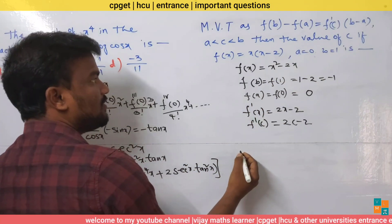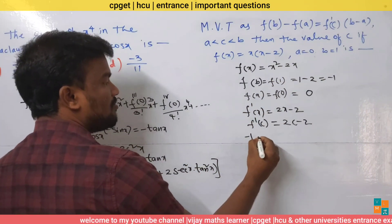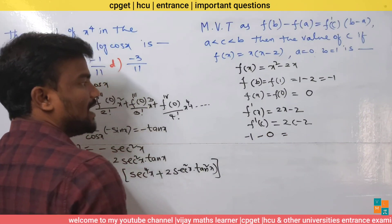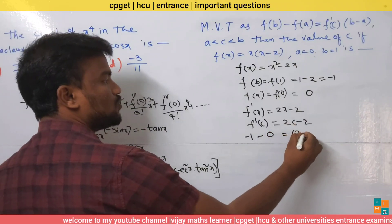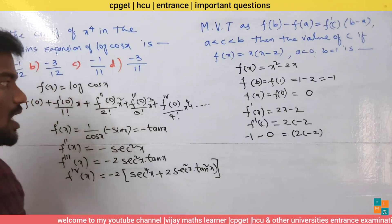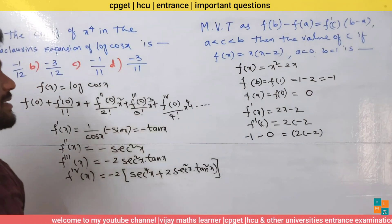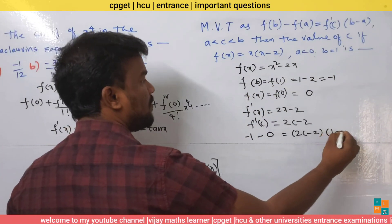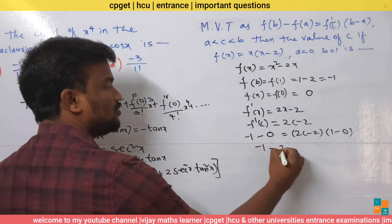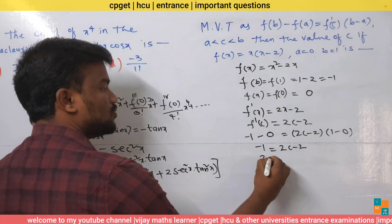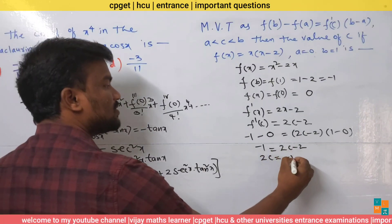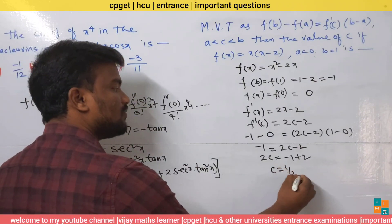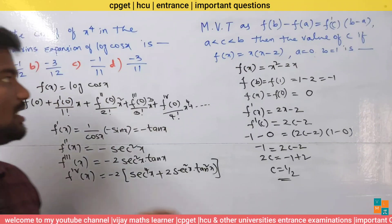Substituting into the Mean Value Theorem: f(b) − f(a) equals f'(c)·(b − a), so −1 − 0 equals (2c − 2)·(1 − 0), giving −1 equals 2c − 2. Solving: 2c equals 1, so c equals 1/2.